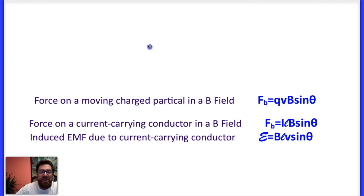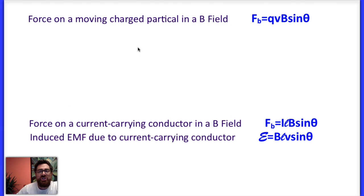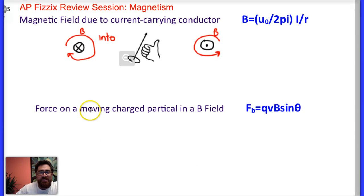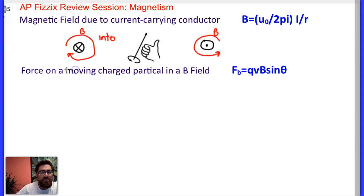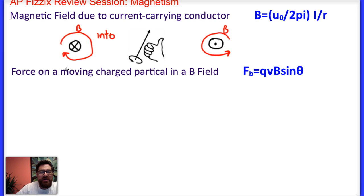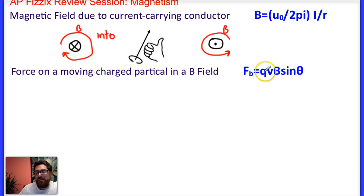The second concept is the force on a moving charged particle in a magnetic field. The magnetic force on a charged particle is the magnitude of the charge in coulombs times the velocity in meters per second times the strength of the magnetic field in Tesla times the sine of theta, where theta is the angle between the direction of velocity and the direction of the magnetic field.